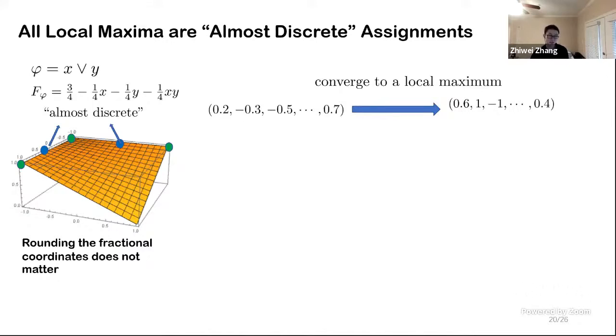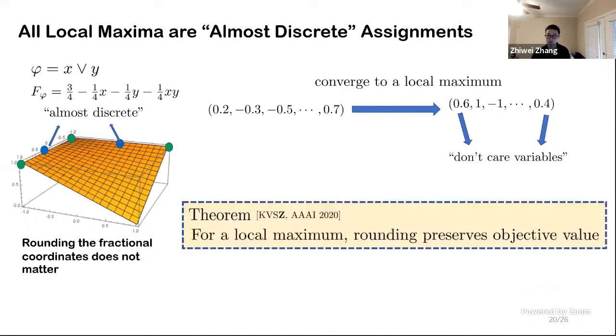While a small set of variables are fractional, we don't care about those variables, because changing the values of those variables does not affect the value of the fitness function. In other words, for a local maximum, rounding preserves the objective value.